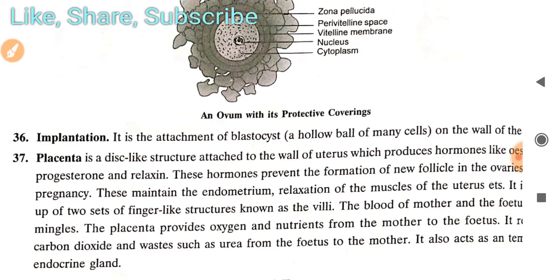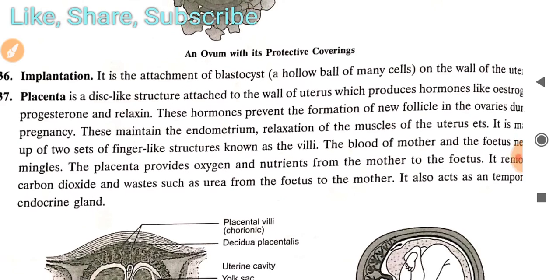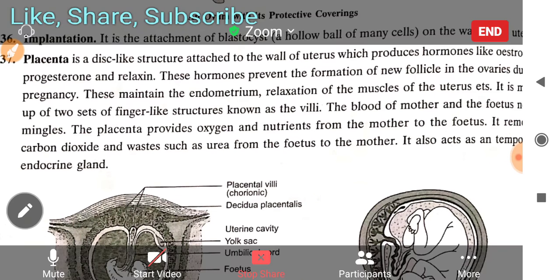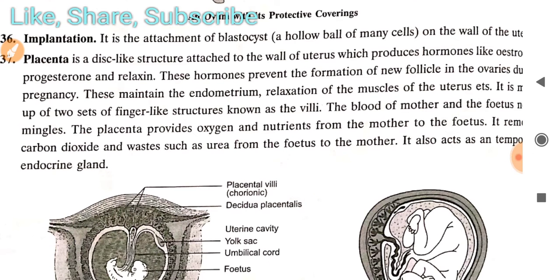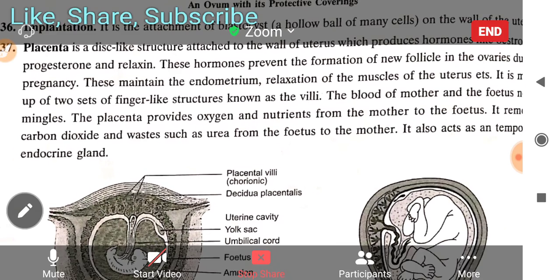Implantation is the attachment of the blastocyst — a hollow ball of many cells — on the wall of the uterus. Then comes the placenta, which is a disc-like structure attached to the wall of the uterus. It produces hormones like estrogen, progesterone, and relaxin.